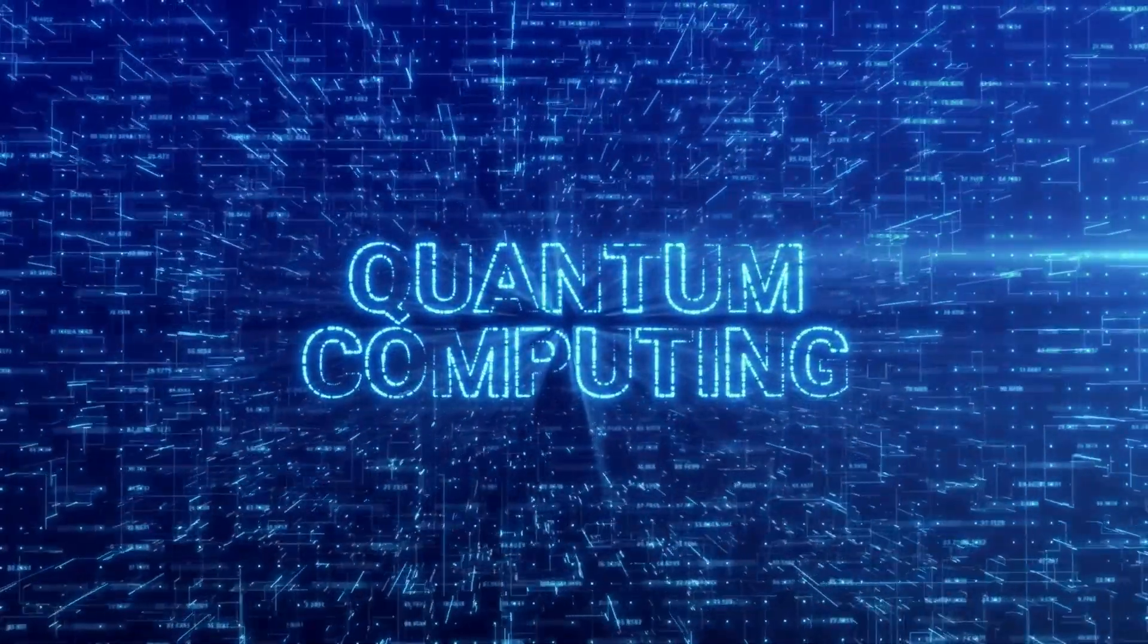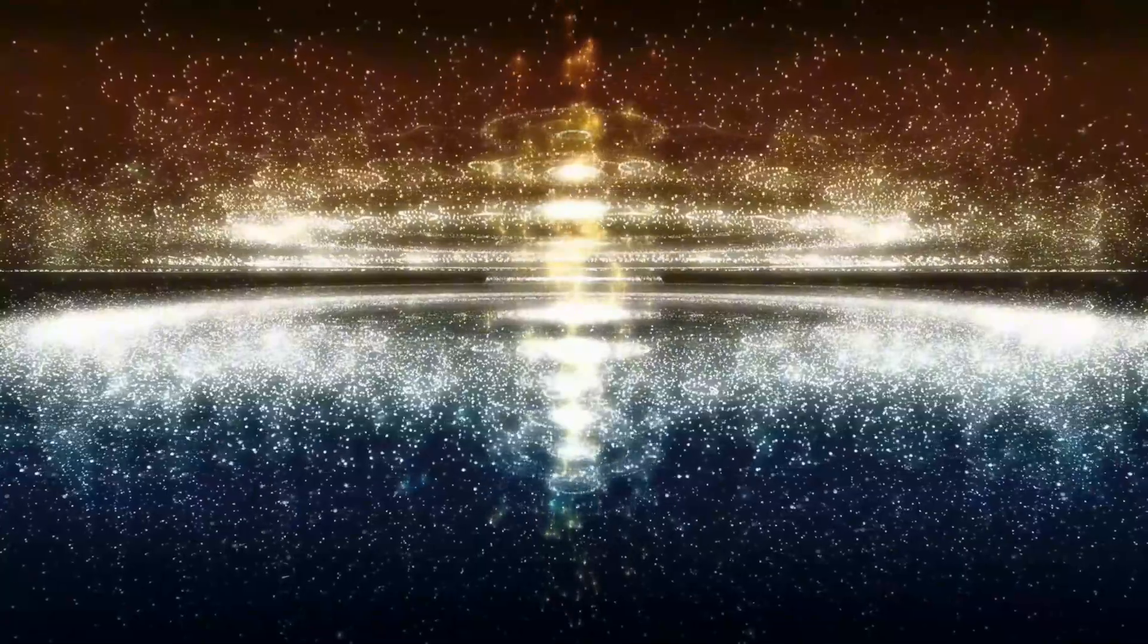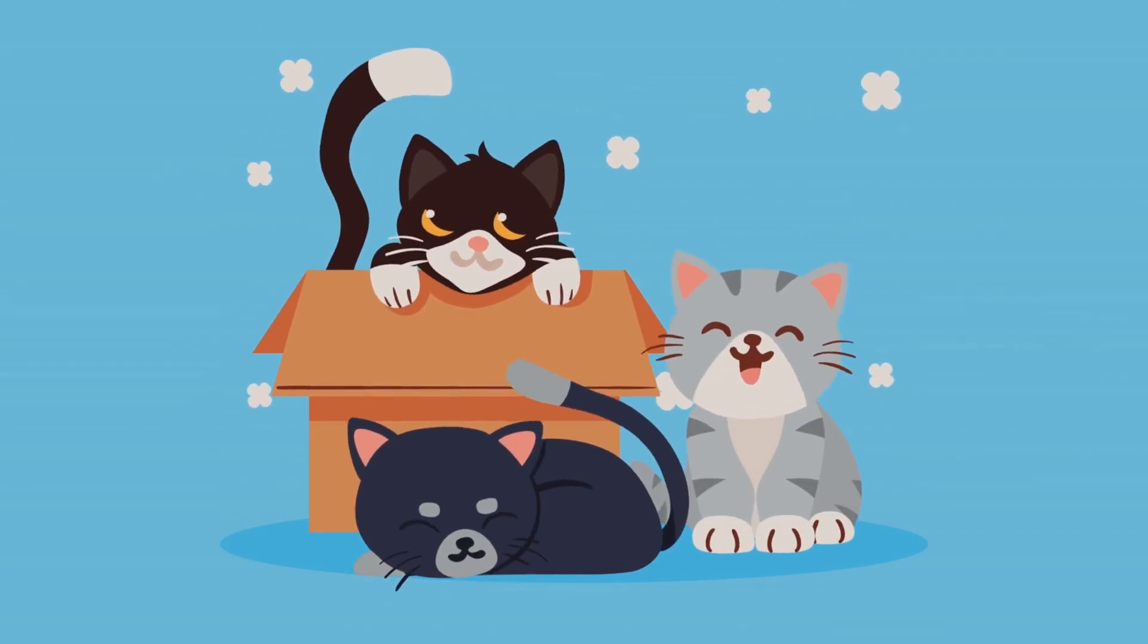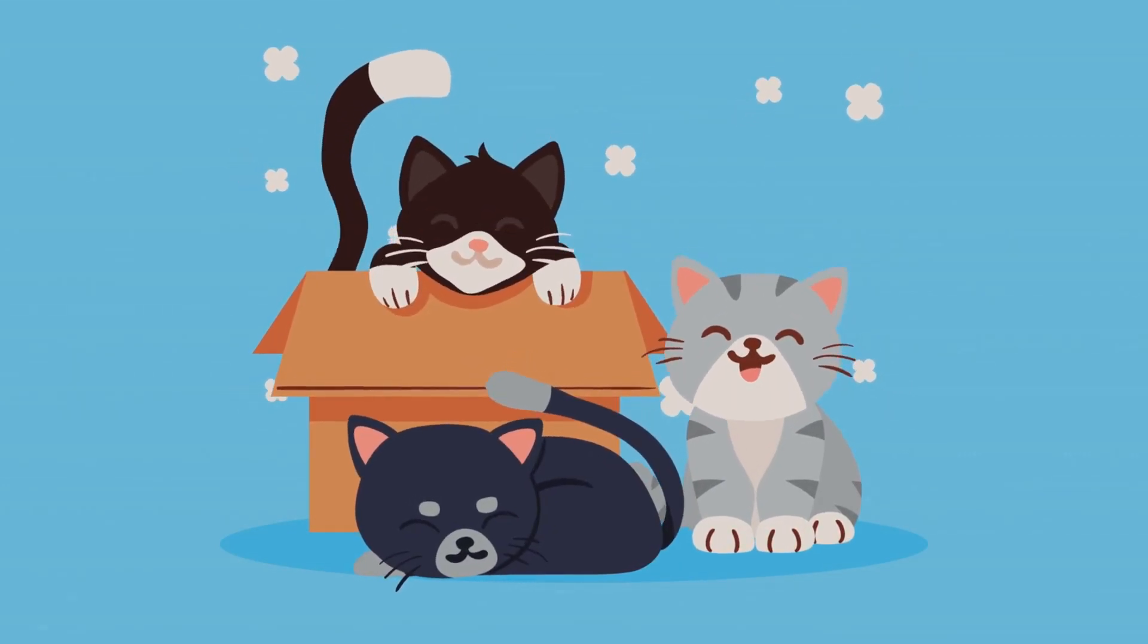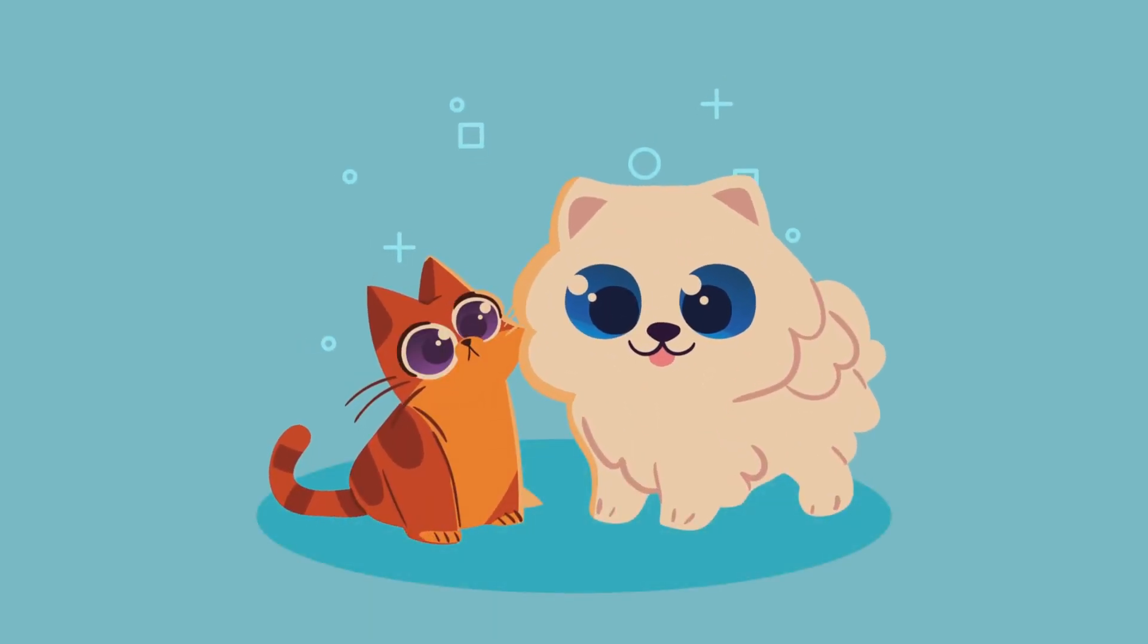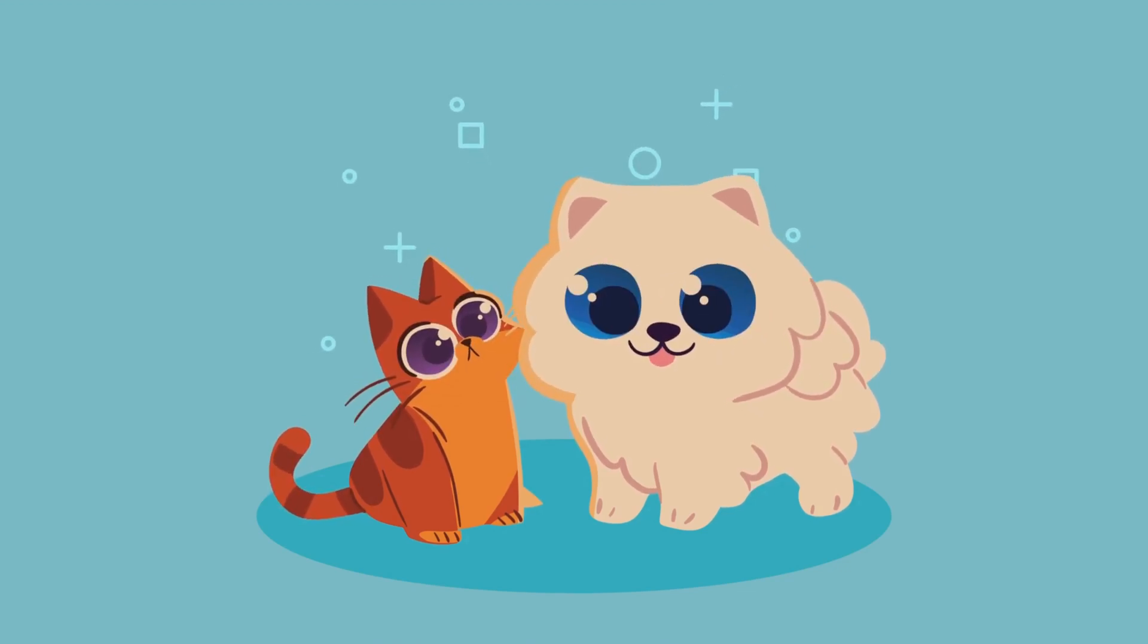In the quantum realm, measurement takes on a whole new meaning. Schrödinger's cat illustrates this: a cat in a box is both dead and alive until observed. Opening the box collapses its wave function, deciding its fate. In quantum teleportation, measurement transfers quantum information. Measuring one entangled particle affects its partner instantly, enabling information transfer.